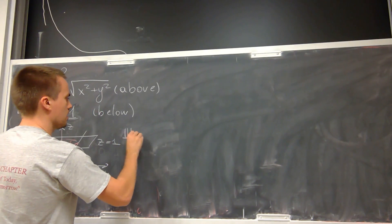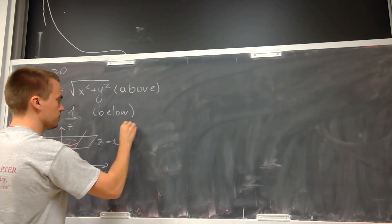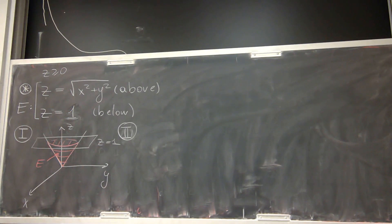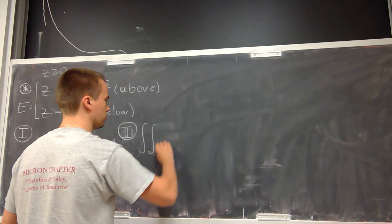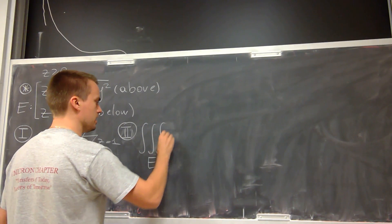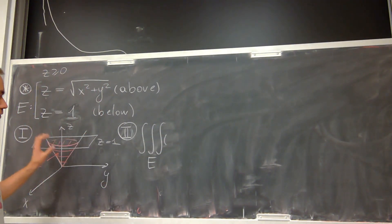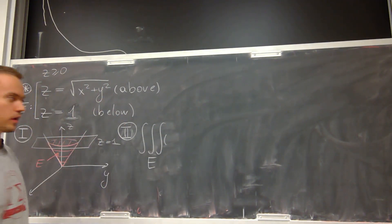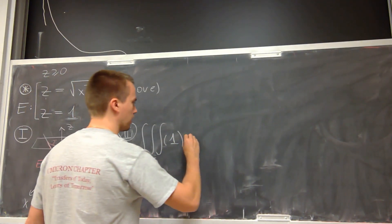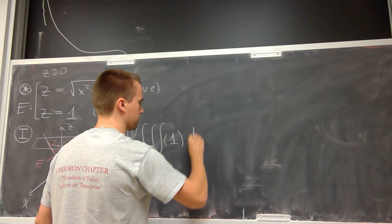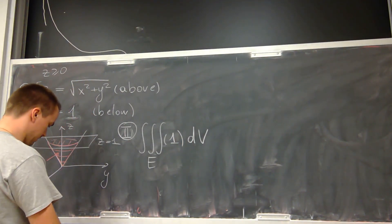Step 2: I need to use the triple integral. According to the triple integral, I have the triple integral over region E, and if I want to find the volume by using a triple integral, my function must be equal to 1 dV. This integral gives the volume.